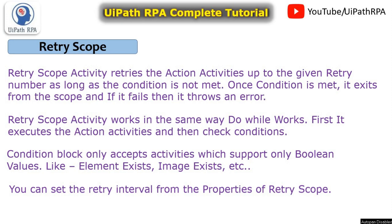It will retry 3, 4, 5, or 10 times depending on configuration. Sometimes we get multiple pop-up messages, so we can retry and click on them, and once we get the next page we can exit. Retry scope works the same as do-while: first it executes the action part, then checks the condition - just like do-while executes the do section first, then checks the while condition.